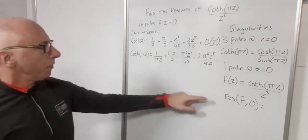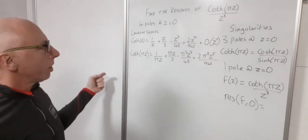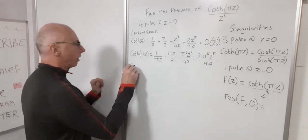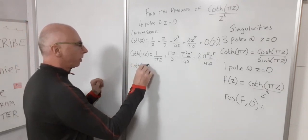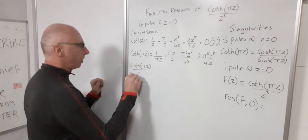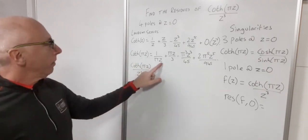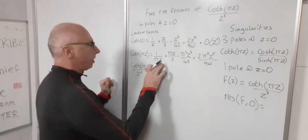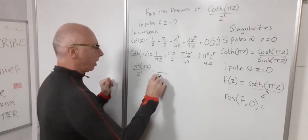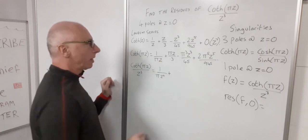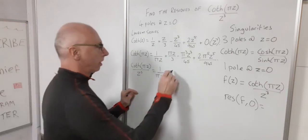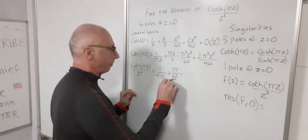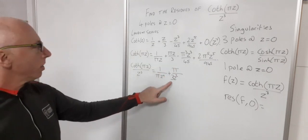Okay now our function is divided by z cubed. So to do that we can just divide all of these terms by z cubed and get our equivalent. So the hyperbolic cotangent function pi z over z cubed. Divide all of these by z cubed. So that'll give us 1 over pi z to the 4. This one pi z divided by z cubed will be pi over z squared times 3 as a coefficient. So that would take care of that one.